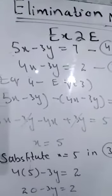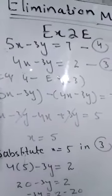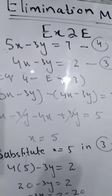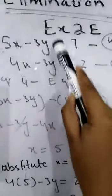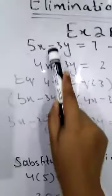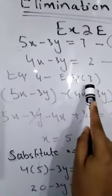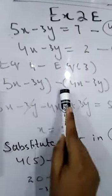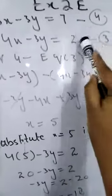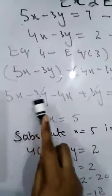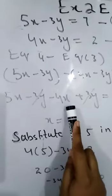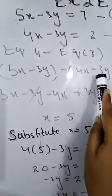As you know, students, we are solving this question by elimination method. You can see the equations have variables with the same sign, so we will subtract: equation 4 minus equation 3. 5x minus 3y minus (4x minus 3y). This minus will change the sign of the values inside the bracket.